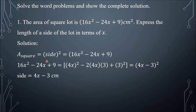For our solution, we have: area of a square is equal to side squared, which is equal to 16x squared minus 24x plus 9.